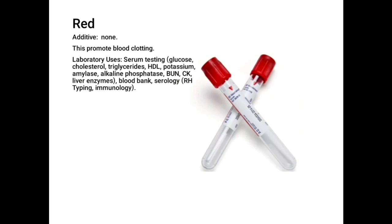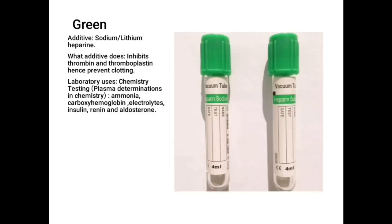The red top container is a plain container without any additive. It is used to promote blood clotting so that serum is obtained. Serum is used for chemistries such as glucose, cholesterol, triglyceride, high-density lipoprotein, and potassium. We also have creatinine kinase, which is an enzyme. It is also used in blood bank for clot matching.